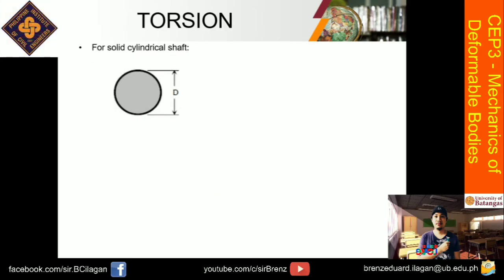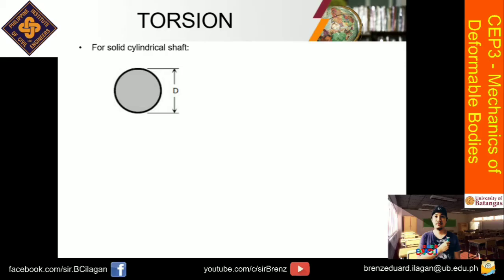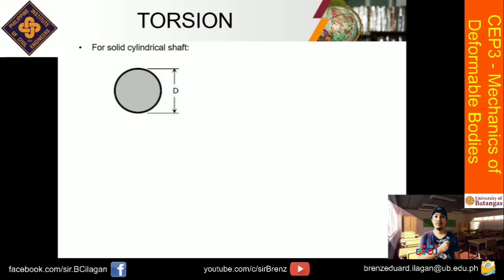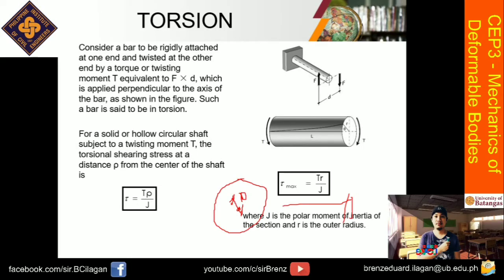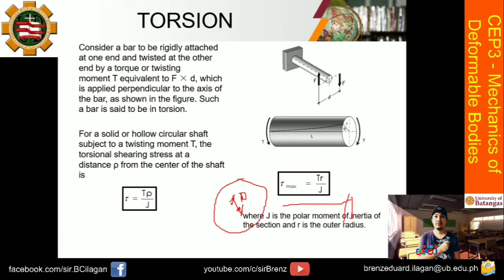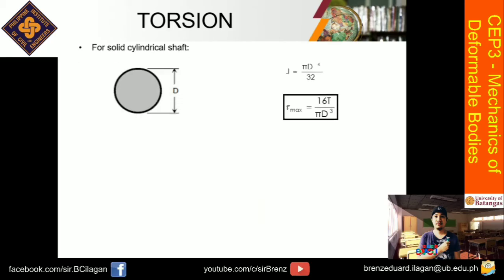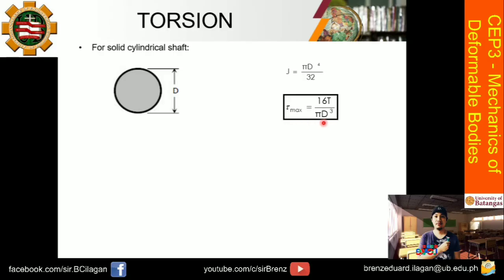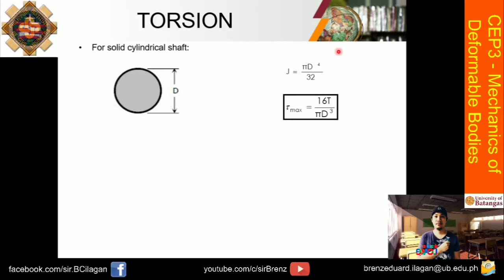For a solid cylindrical shaft with diameter d, J equals pi times d to the 4th power over 32. When you substitute this into the original torsion formula tau = Tr/J, you arrive at a derived equation for solid shafts. I prefer you memorize the basic formula tr over j and derive from there, since you already know J from Statics — J equals Ix plus Iy.